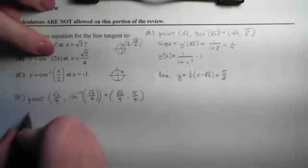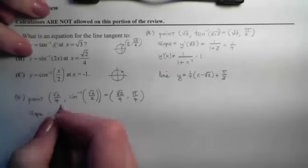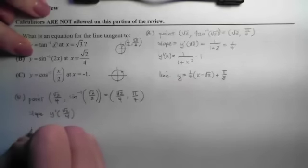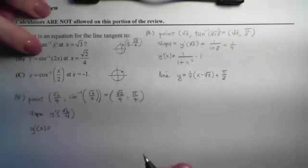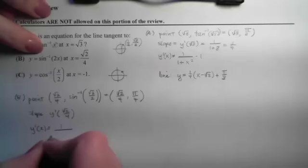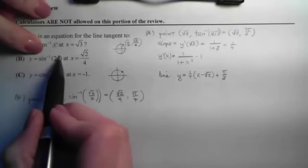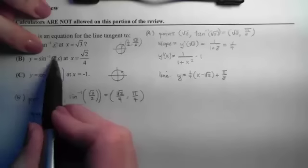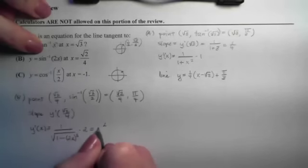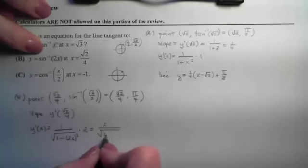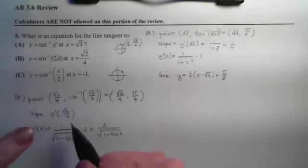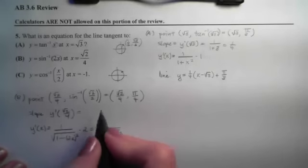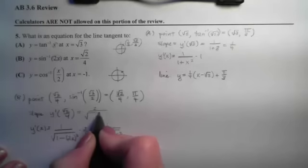Now we have the point and we still need the slope. The slope is the derivative evaluated at the point, so we need to take the derivative. The derivative of arcsine is 1 over the square root of (1 minus whatever's inside squared) times the derivative of what's inside. We end up with 2 on top and a square root of (1 minus 4x squared) on the bottom.